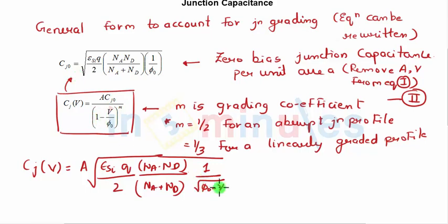Where M is the grading coefficient. For an abrupt junction profile where we have uniformly doped acceptor and donor, M = 1/2, so you get exactly the same equation seen here. For a linearly graded profile, M = 1/3. The reason we wrote this in general format is if they give us the junction profile, we can use this general equation to calculate our junction capacitance.